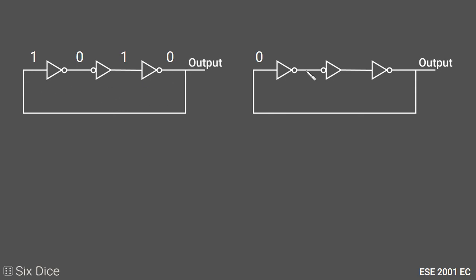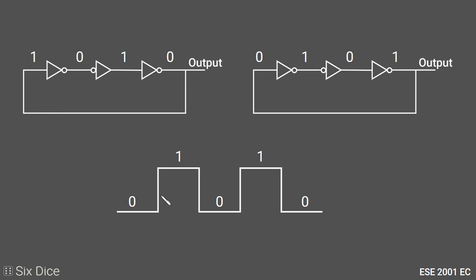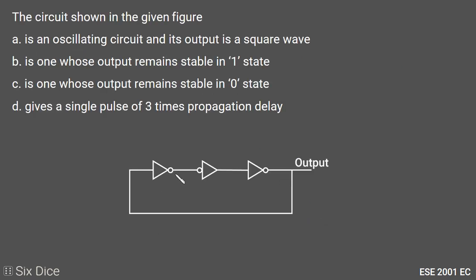Case two: output is zero. The NOT gate changes it to one. We feed this to the buffer with a bubble input, so one becomes zero due to the bubble. The buffer adds some delay, so the output of this buffer is zero. This zero is the input of the last NOT gate, so the output of this NOT gate is one. Output changes from zero to one. So the output keeps changing: zero to one to zero to one to zero — it is a square wave output.